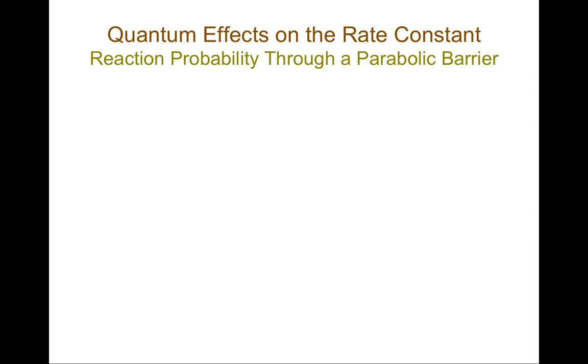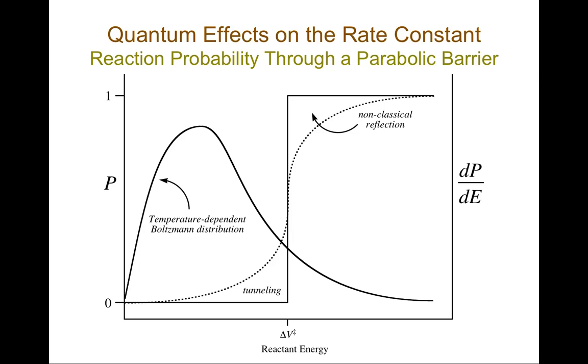So let's look at quantum effects on the rate constant associated with the probability of a reaction proceeding through a parabolic barrier. Imagine that I have a barrier that's a parabola and it has a certain height, call that height above the reactant delta V double dagger.